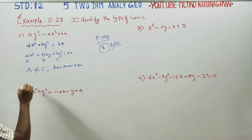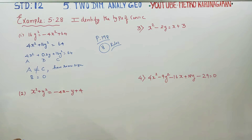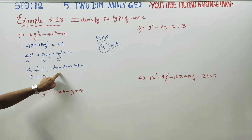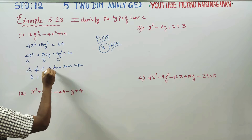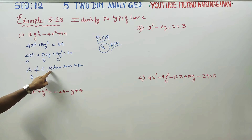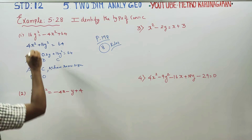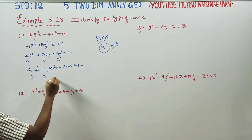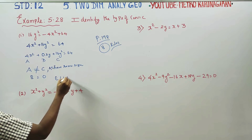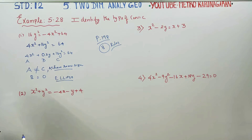When a and c have the same sign, and b is equal to 0, the equation represents an ellipse. So this conic is an ellipse.